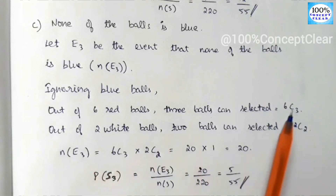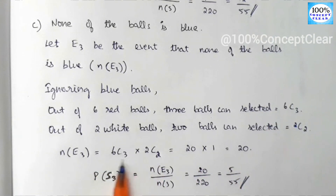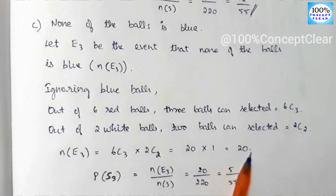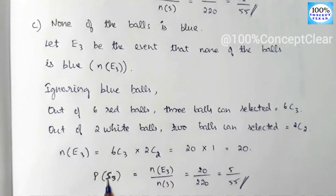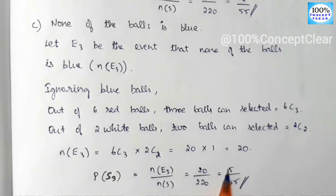n(E3) equals 6C3 into 2C2. 6C3 = 20 and 2C2 = 1. So n(E3) = 20. The probability P(E3) = n(E3) divided by n(S) = 20 divided by 220, which reduces to 5 by 55.